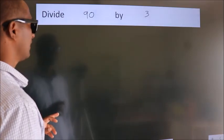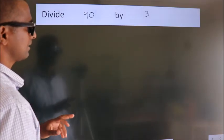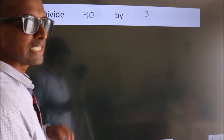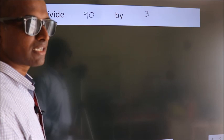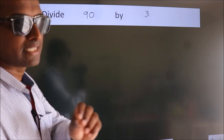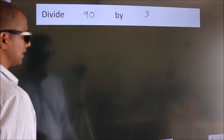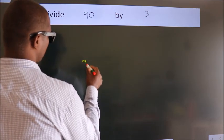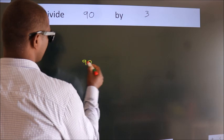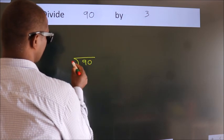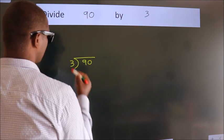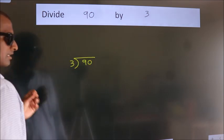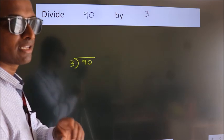Divide 90 by 3. To do this division, we should frame it in this way: 90 here, 3 here. This is your step 1.